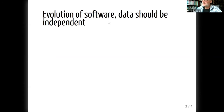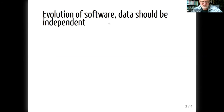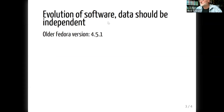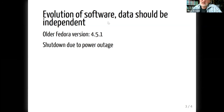So the landscape is quite heterogeneous, and we don't put the data in one repository, but we use several ones. They came along with different versions of Fedora 4 as well. As software evolves, we would like to apply new versions of Fedora to the same data, and the data should be independent of the software. In one case, we still use an older Fedora version, namely 4.5.1.